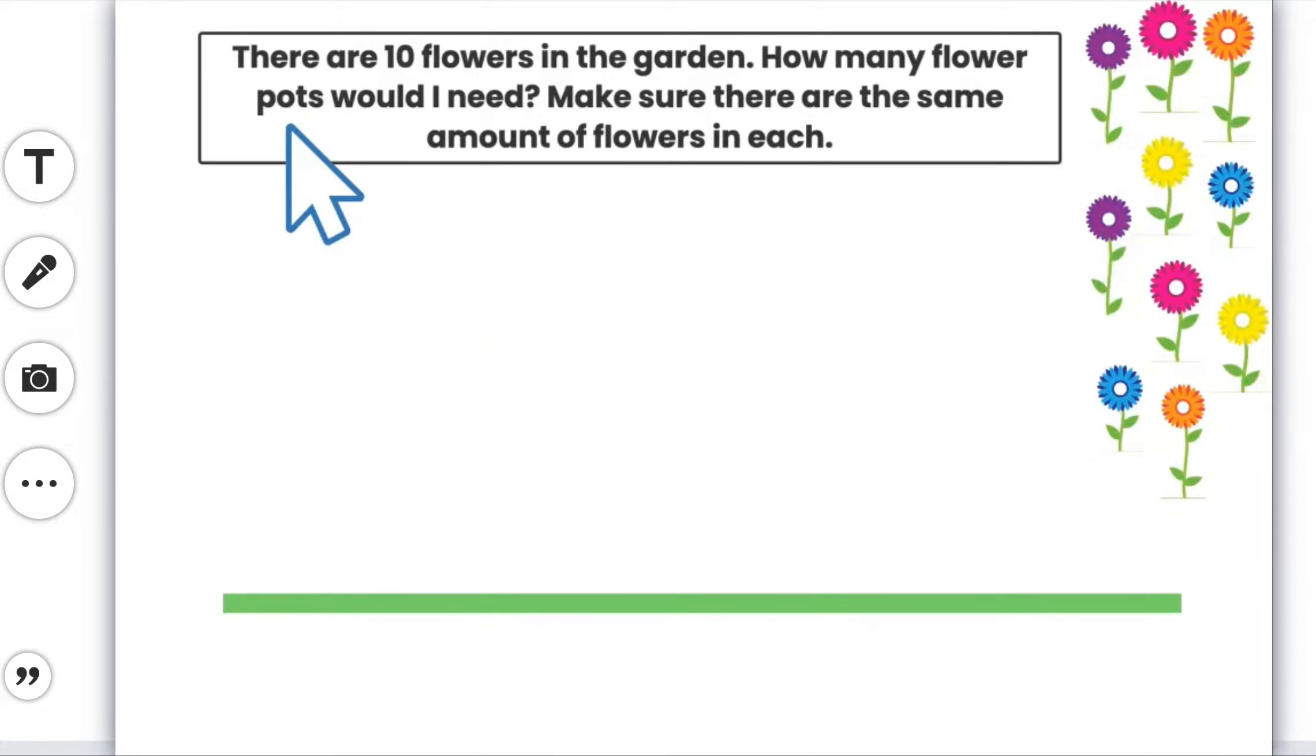Now I need some pots and I know it says that there needs to be the same amount in each of the pots. So the pots are like my groups and the flowers are my objects. So what I'm going to do, I'm going to use the drawing tool on Seesaw to make my pots. I'm just going to do 5 plus 5, then that means that it would be the same amount in each. So I'm going to start by doing 2 pots.